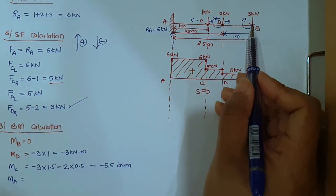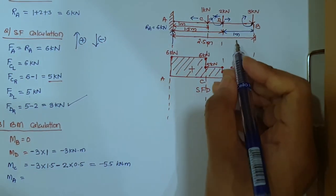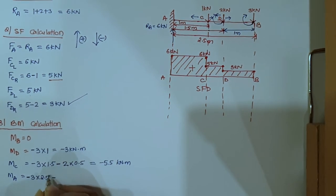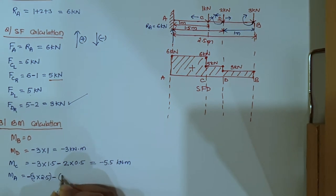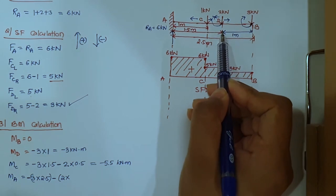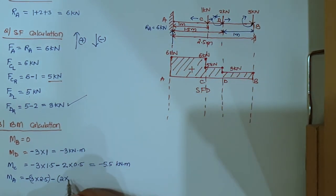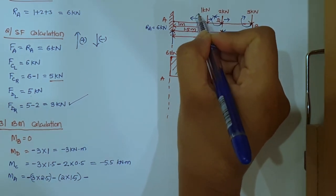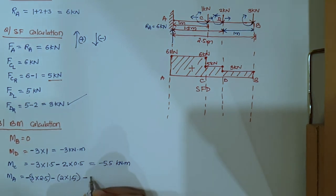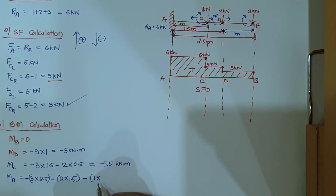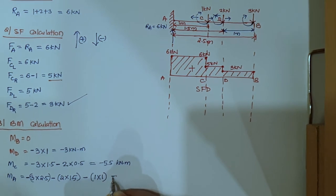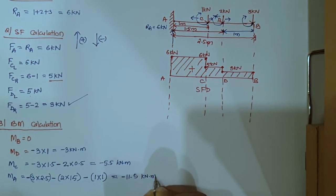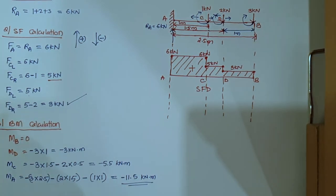Moment at fixed end A: moving from B all the way to A. We have −3 × 2.5 minus 2 × 1.0 minus 1 × 1.5, giving moment at A = −11.5 kilonewton·meter.